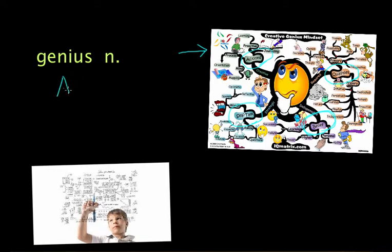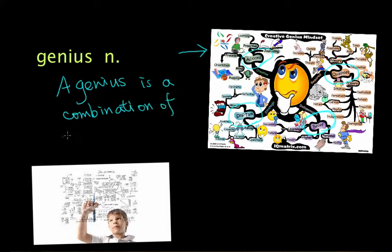So basically, a genius is a combination of all the good qualities in a person—including your intelligence, your action, and your beliefs, and also how you communicate with yourself.